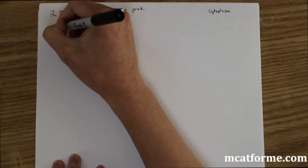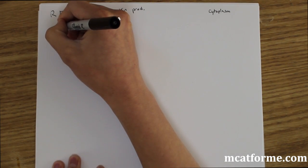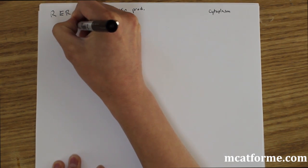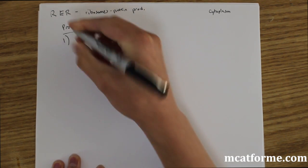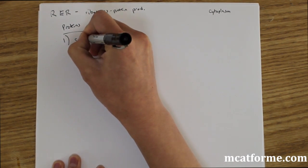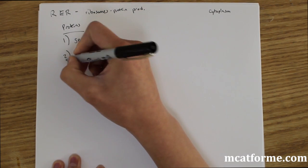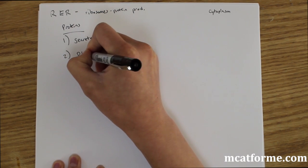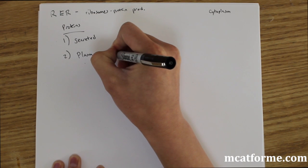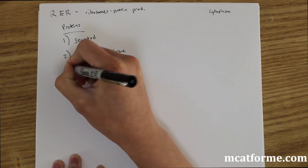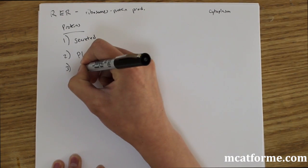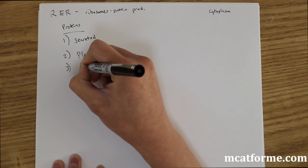So the proteins produced on the ribosomes on the rough ER, we'll see that these could be either one, they could be secreted. Two, they can be in the plasma membrane of the cell, integrated into the plasma membrane. Or the final one is they could be integrated into the rough ER itself.